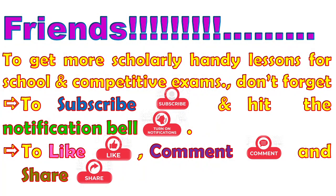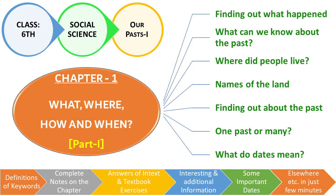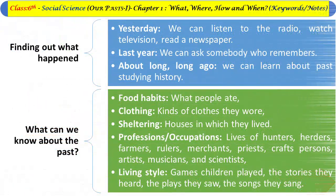This video is on 'What, Where, How and When' — the first chapter of Our Pasts Part 1 of Social Science Class 6. This chapter covers topics like finding out what happened, what we can know about the past, where people lived, names of the land, finding out about the past, one past or many, and what dates mean. We will also learn definitions of keywords, complete notes, sources, and textbook exercises.